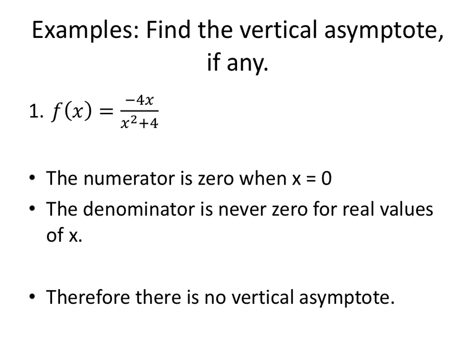So let's find the vertical asymptote, if any. We know, for this particular function, the numerator is zero when x is zero. We know the denominator is never zero. Since the denominator is never zero, there's no vertical asymptote. Why is the denominator never zero? Take any real number and square it. It'll be zero or positive. When I add 4, it'll now be 4 or higher in the denominator, therefore never zero.